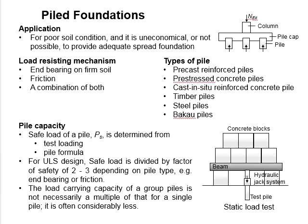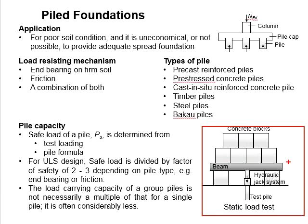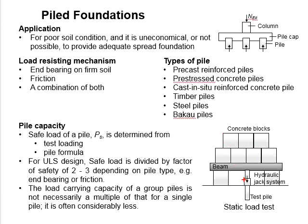In terms of pile capacity, the safe load of a pile is normally determined from pile loading tests and pile formulas. This is a typical pile loading test, known as the static load test. This is the pile to be tested, which is already driven into the soil. There will be a beam and some weights consisting of concrete blocks. A hydraulic jack system is placed here, and the system is connected with a data acquisition system in order to measure the load generated by the hydraulic jack system.